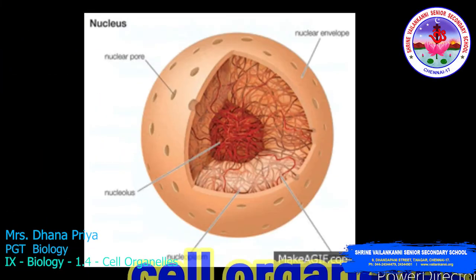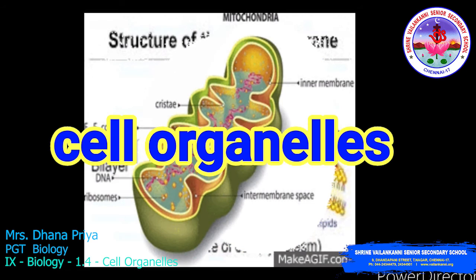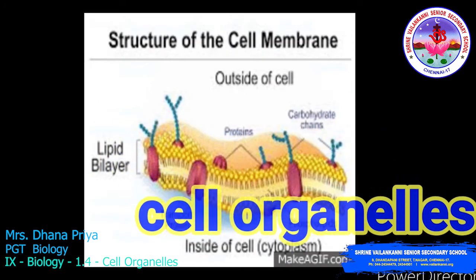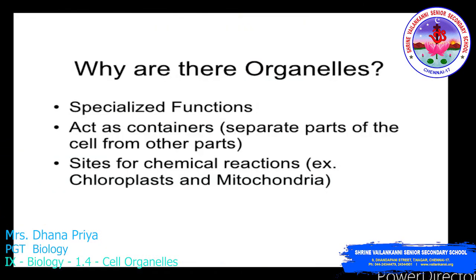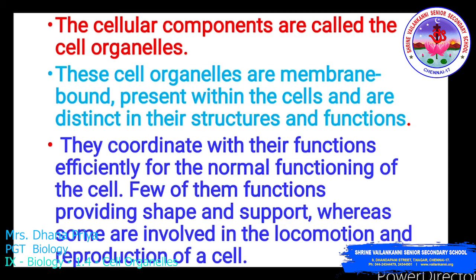Hello students, we're going to discuss cell organelles — the types present in plant cells as well as animal cells. Organelles are specialized in function and act as containers that separate parts of the cell from other parts. They also act as sites for chemical reactions, for example chloroplasts and mitochondria. The cellular components are called cell organelles. These are membrane-bound structures present within the cell, distinct in structure and function, and coordinate efficiently for normal cell functioning.